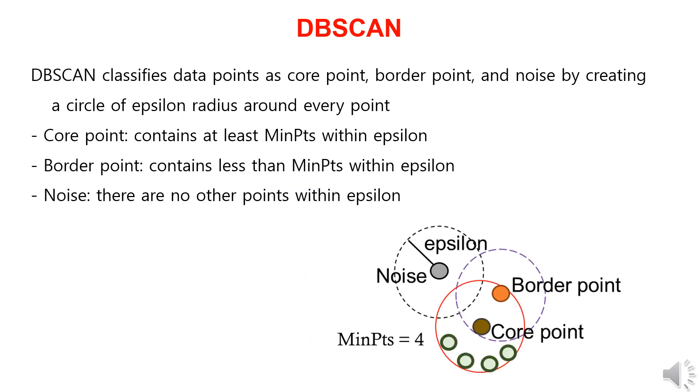In DBSCAN, it classifies every data point into one of three categories: core point, border point, or noise, by creating a circle of epsilon radius around every point. If a data point has at least the minimum points within the epsilon radius, it is classified as a core point. If a data point has fewer than the minimum points within the epsilon, it is classified as a border point. Finally, if a data point doesn't have any other data points within the epsilon, it's considered noise.